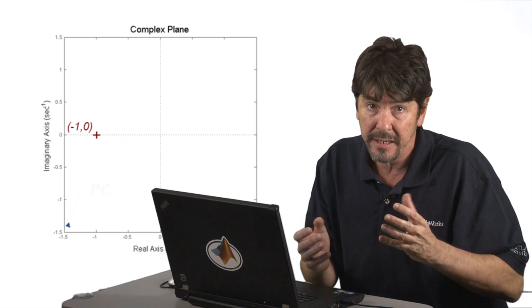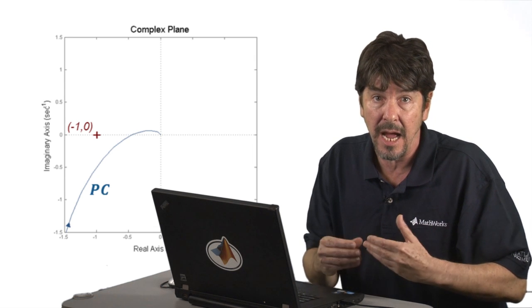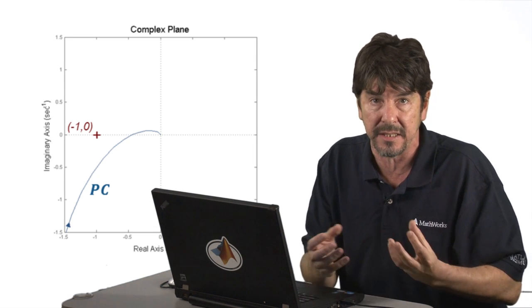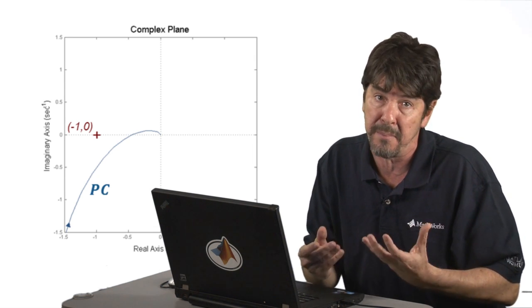This plot, by the way, is called a Nyquist diagram, and notice that it is constructed with the same information we use for the Bode diagram.